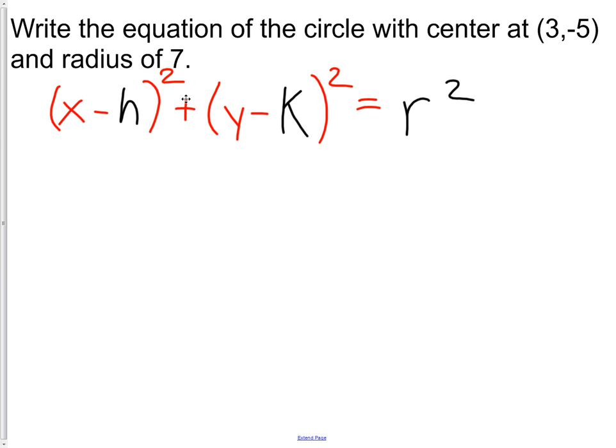x minus h squared plus y minus k squared equals radius squared. The reason I color coded that is sometimes those minus signs throw people off a little bit. What we're actually going to do is we're just going to substitute in for h and k. The x minus and the y minus are already part of our equation. So I have x minus, what is my value of h? My value of h is 3.